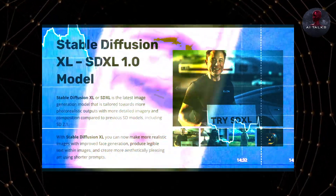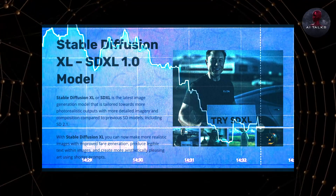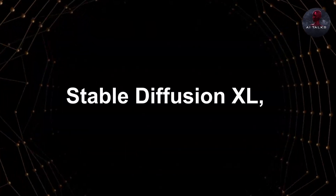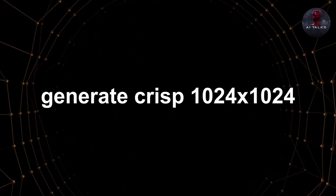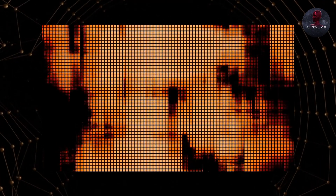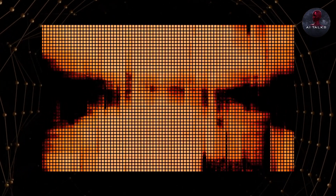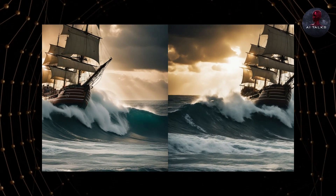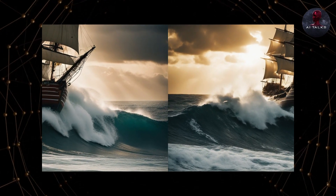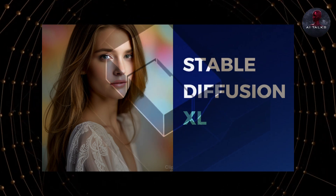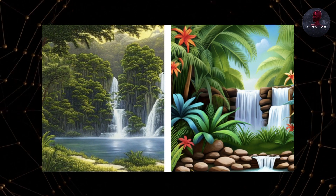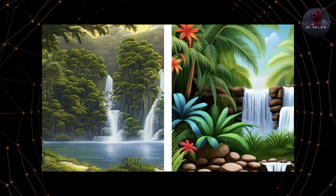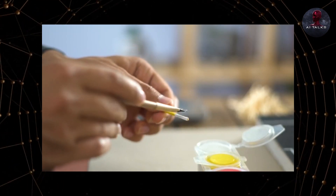Platforms like Stable Diffusion XL represent a major leap forward in raw technical capabilities. Stable Diffusion XL, or SDXL, introduces the ability to generate crisp 1024x1024 images right away. Previous models like the original Stable Diffusion capped out at 512x512 without upscaling. The high resolution provides significantly more detail and fidelity for complex scenes. SDXL also enhances quality through a multi-model pipeline: the base model handles text-to-image generation, then the refiner fills in details, while LoRA improves lighting and color.